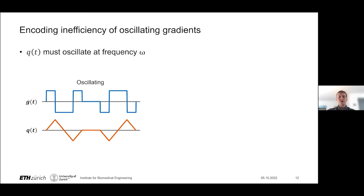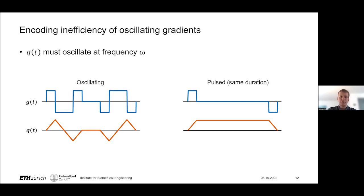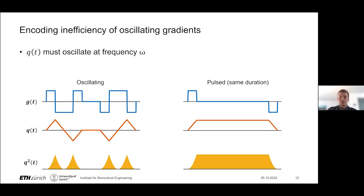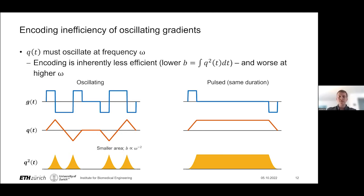One main drawback of using oscillating gradients is that they are an intrinsically inefficient form of diffusion encoding, exactly because of these oscillations. Comparing to the pulse gradient case without oscillations: on the left, q(t) oscillates about zero, while on the right, q(t) is a constant positive value in a trapezoid. Looking at q², in the pulse gradient case — no oscillations — we have a constant positive area, whereas in the oscillating gradient case we have multiple lobes and less accumulated area overall due to these oscillations. This is exactly the mechanism for encoding inefficiency, and it becomes worse at higher frequencies.